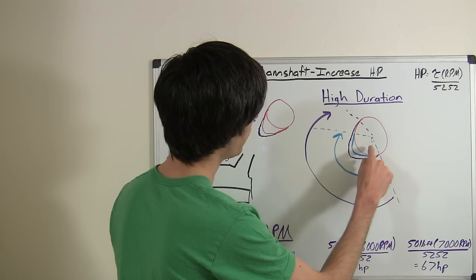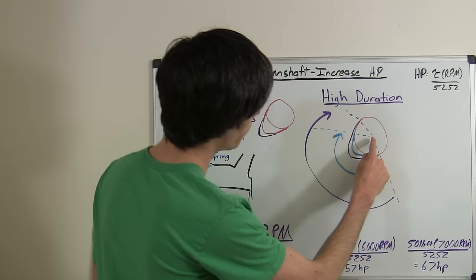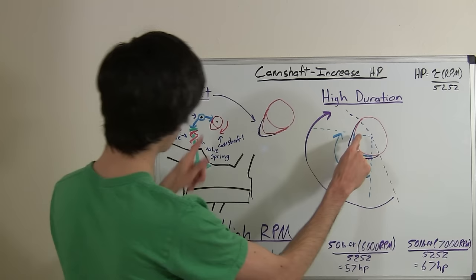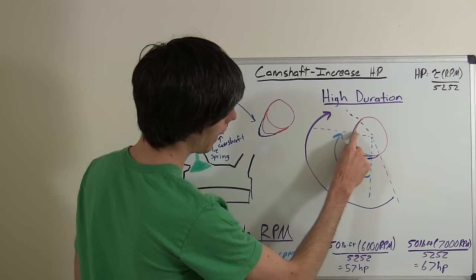You can see that the valve is going to be opened from when the camshaft hits first, starts lifting this rocker arm right here along this line, and then it's going to be open until right here.